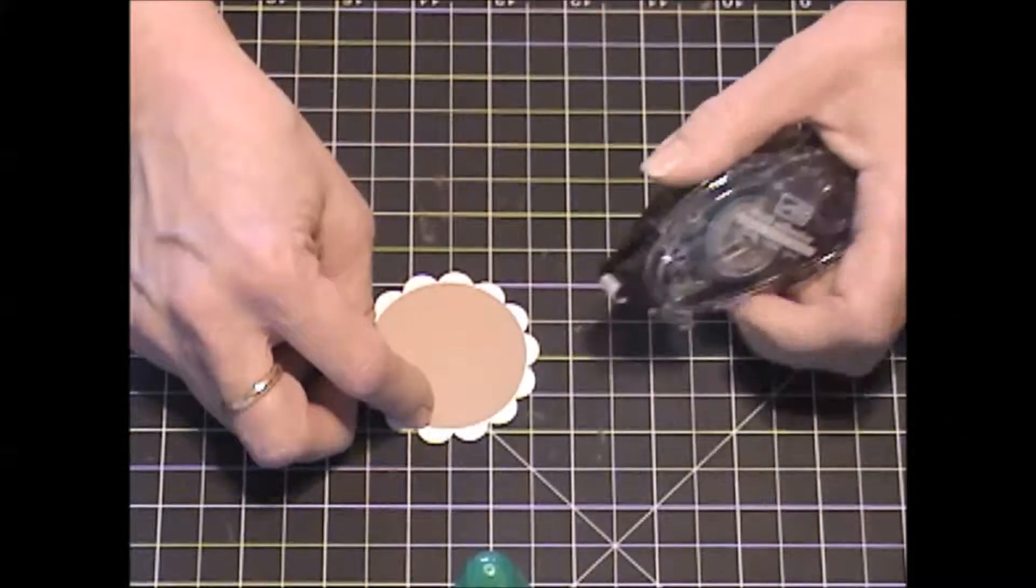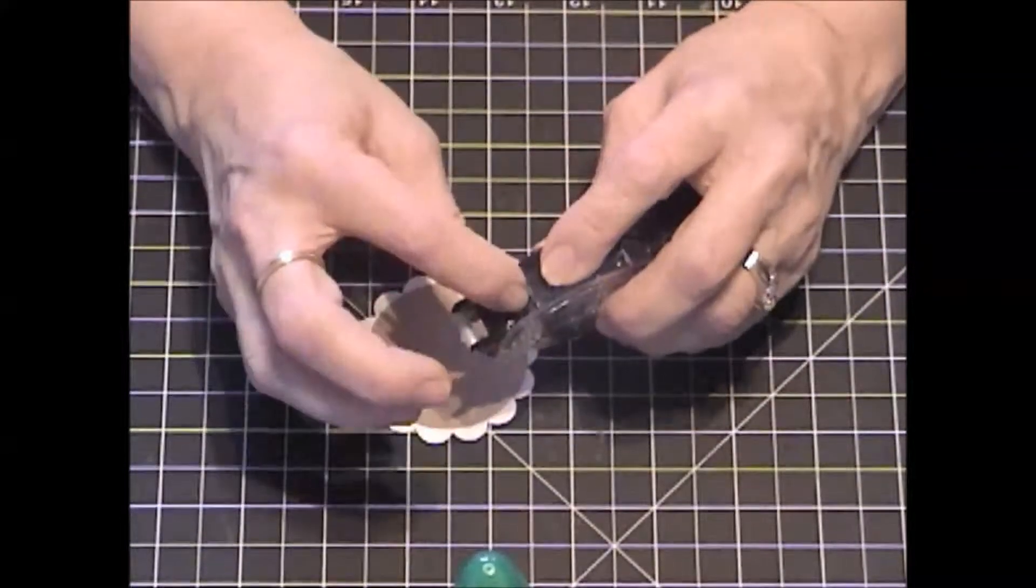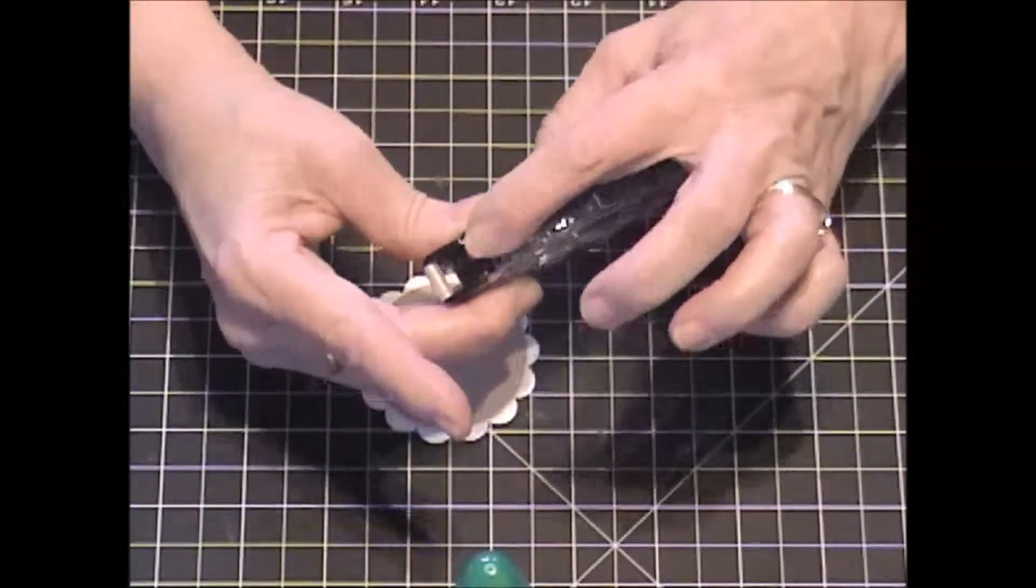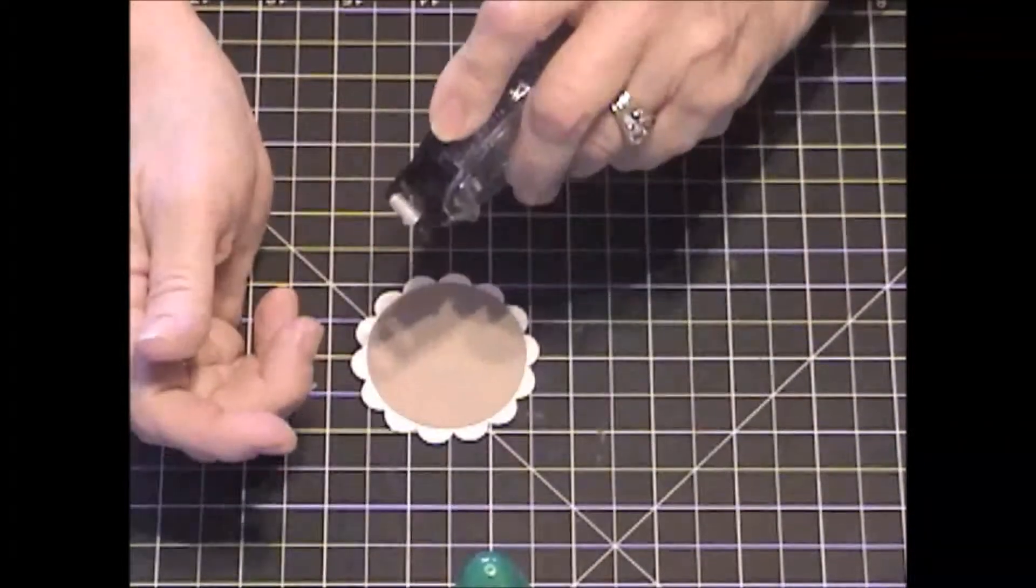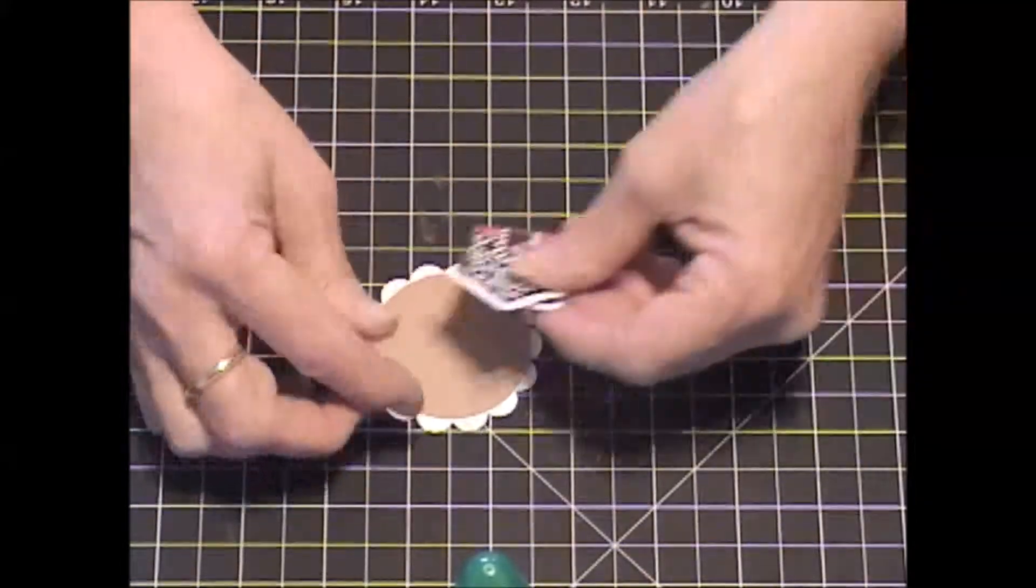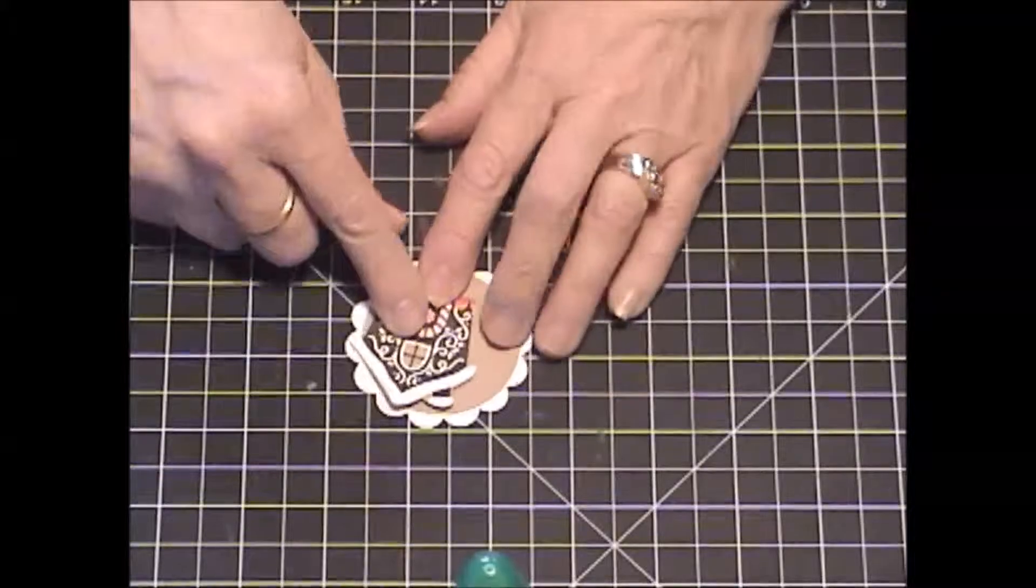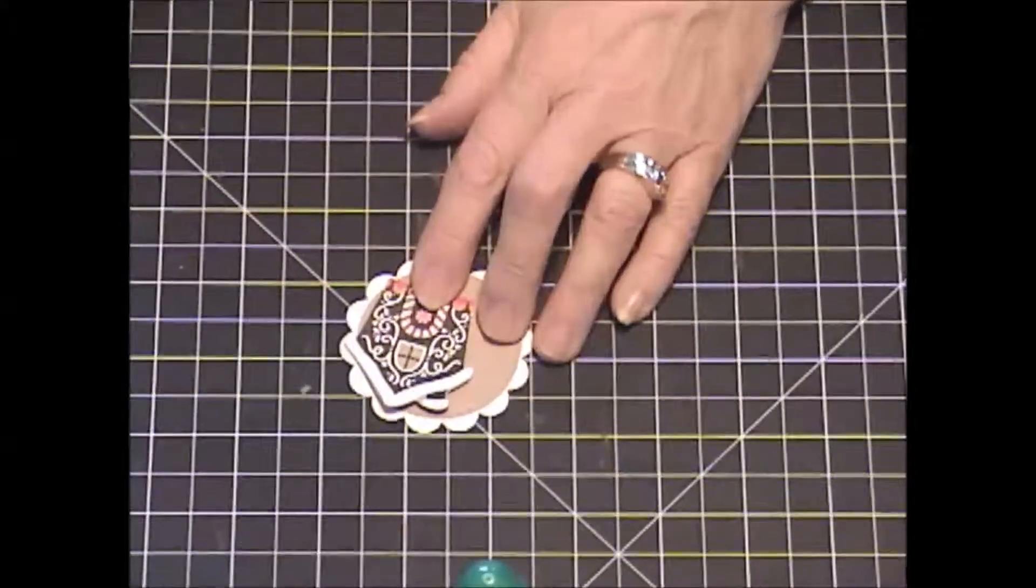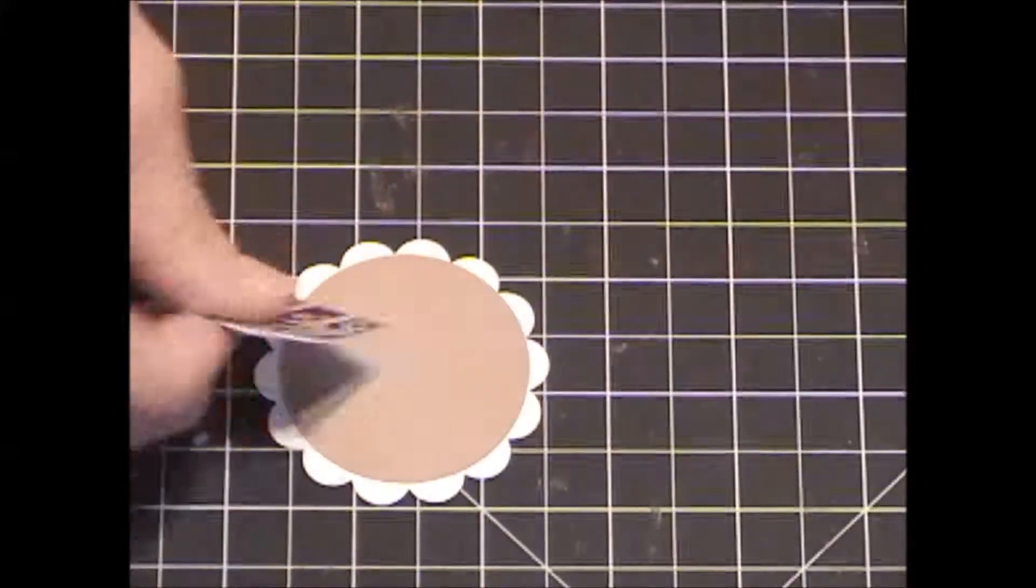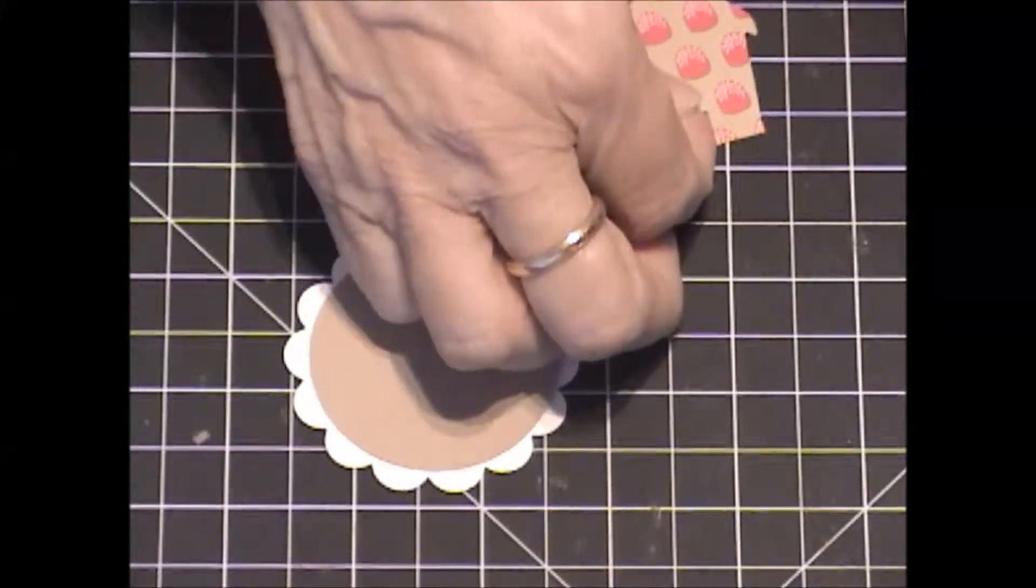For a long time I didn't know which way to hold my snail. I kept turning it upside down. So maybe you're brighter than I am, but there's a little rib part here on the top and just put your finger on there. And we're going to use a couple of, I've already pre-cut out one of the little houses from our Candy Cane Lane DSP. A couple of dimensionals on the back of that.